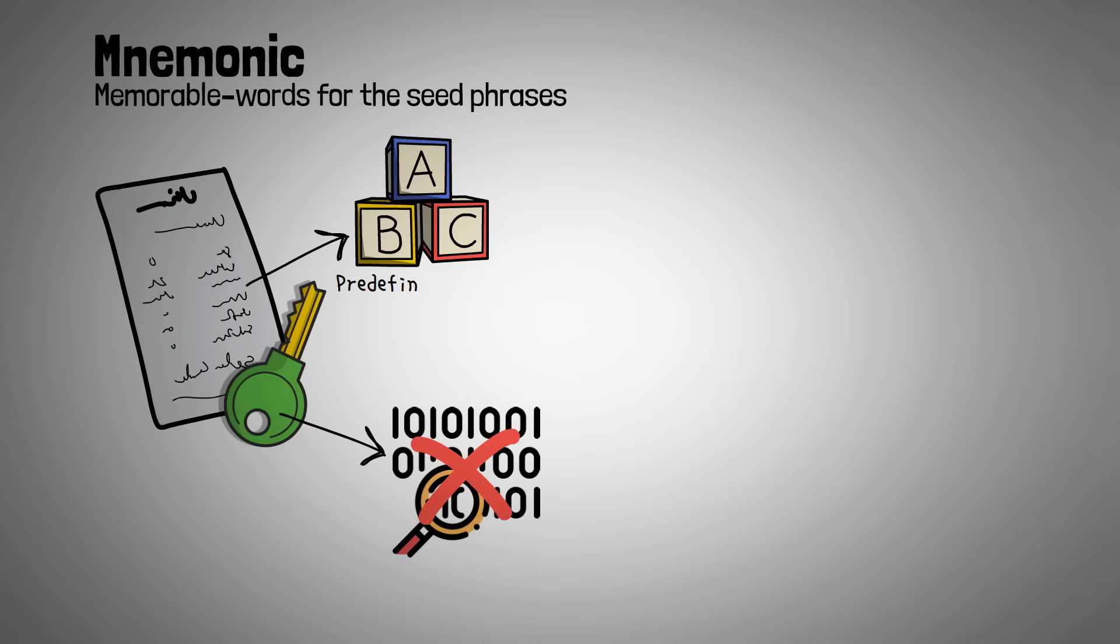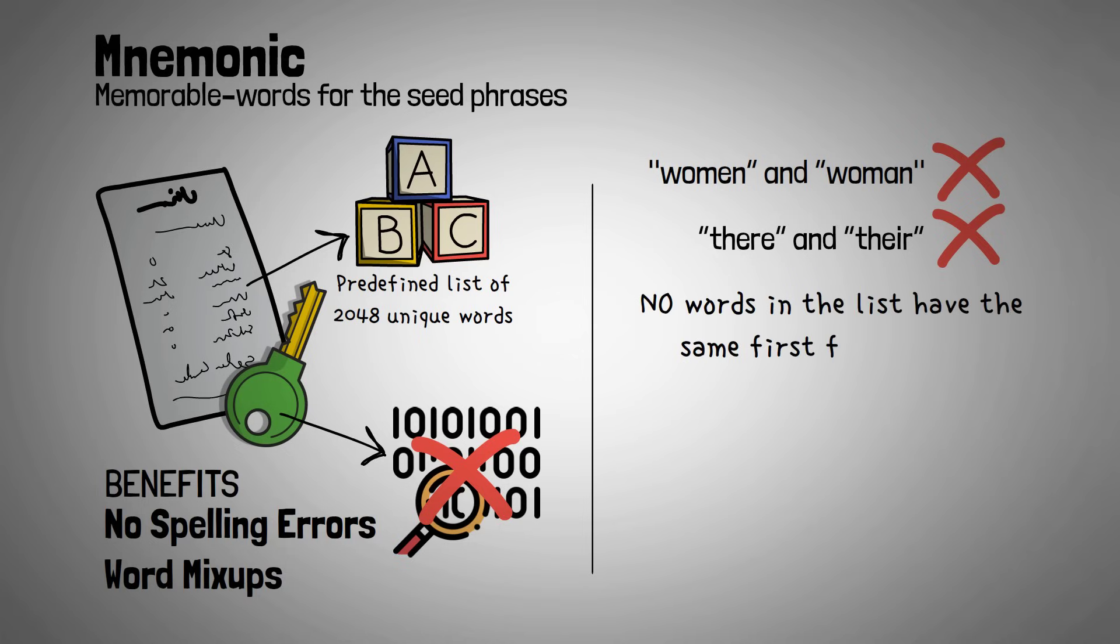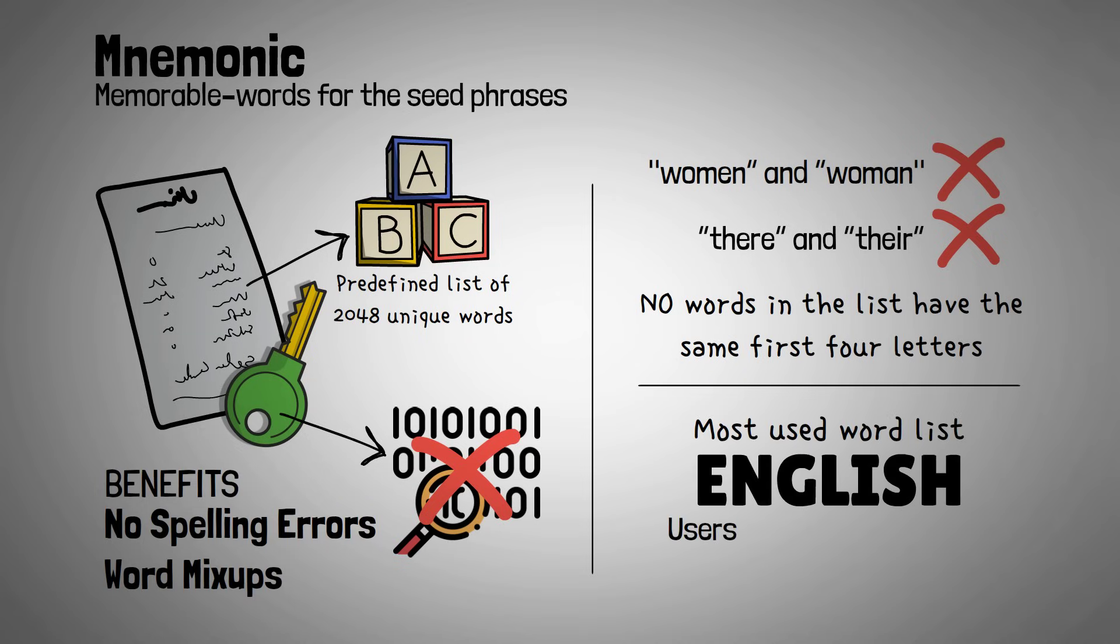There is a predefined list of 2,048 unique words that can be used in the mnemonic phrase. You might be wondering why these specific words. Well, to make sure that there are no spelling errors, word mix-ups, or otherwise. Like, there won't be both women and woman on there, or there and their. Otherwise, it would be much less memorable and the list would be more prone to errors. Also fun to know, no words in the list have the same first four letters, which is a neat trick to identify the word, too. The most used word list is the English one, but users have created nine other languages available now, too.